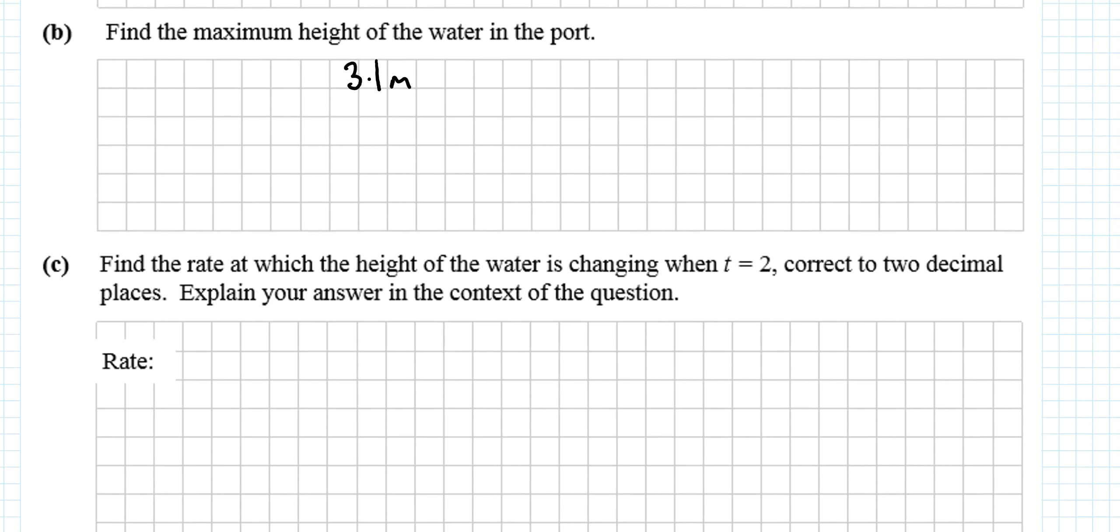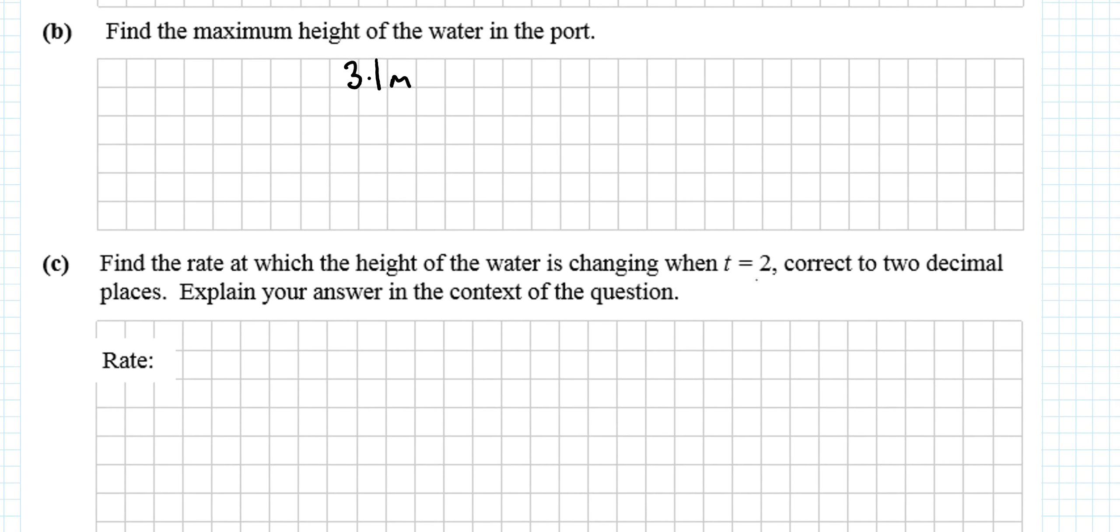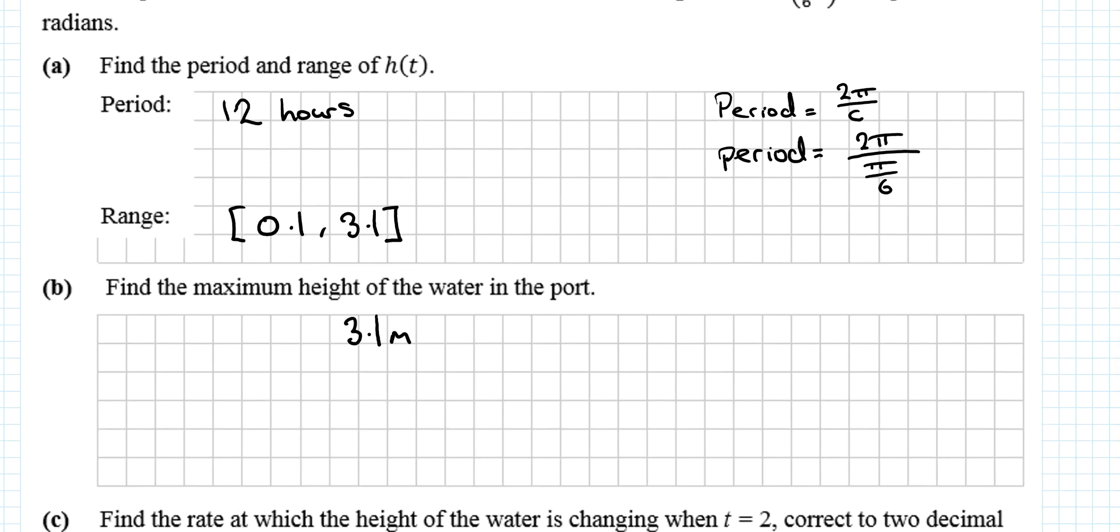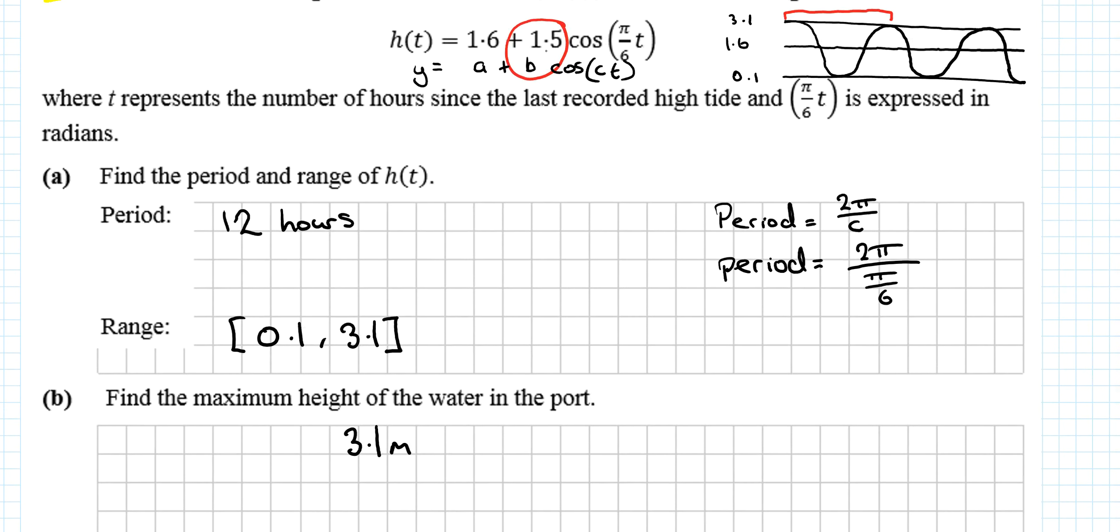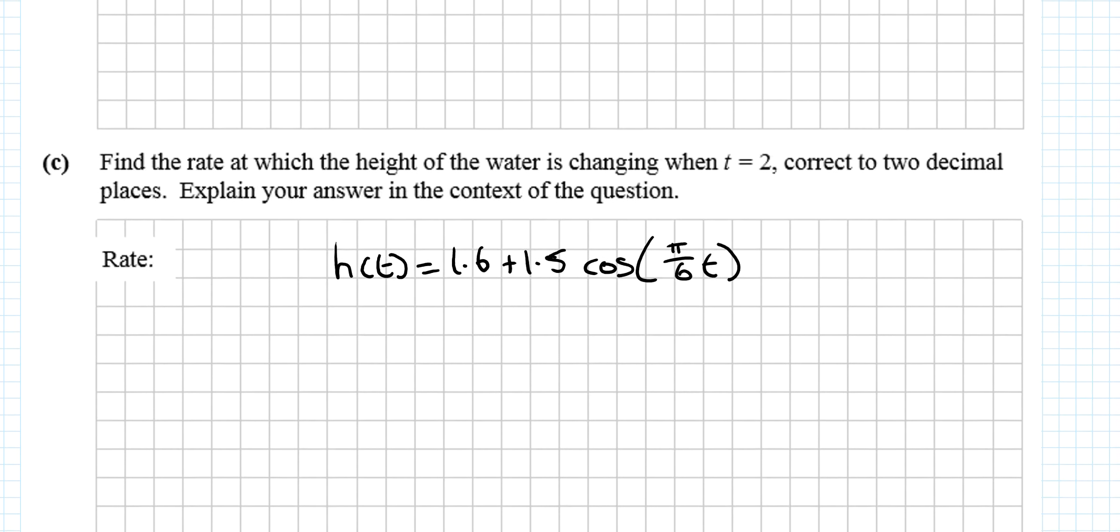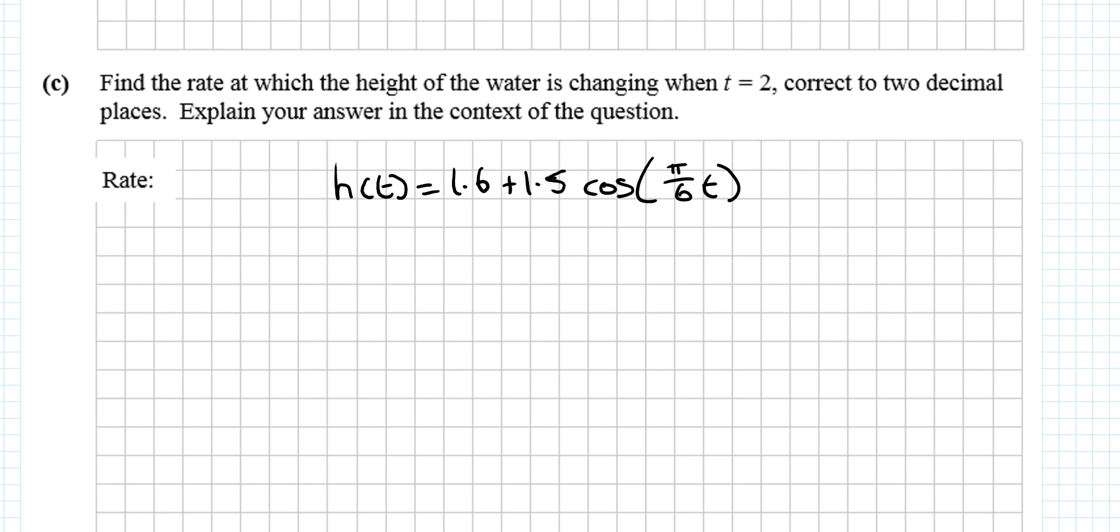Moving on then, find the rate at which the height of water is changing when t equals 2, correct to two decimal places. If you haven't done differentiation, you're going to ignore this question. Let me write down the question: h(t) = 1.6 + 1.5 cos(πt/6). What's that looking for us to find? Height dash of t, which is the first derivative.